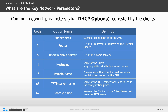What are the key network parameters? Some of the common parameters, also known as DHCP options, are requested by clients and configured by administrators on the DHCP servers. The table below provides a look at each option, the code, name, and definition. Options 3, 6, and 15 are some of the most common parameters used on the network, enabling clients to communicate with each other.